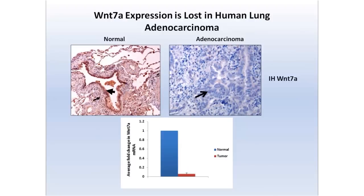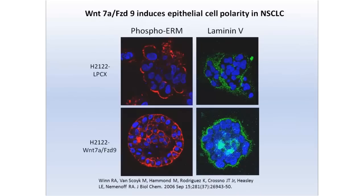If you look at normal lung — given here on the left, stained for Wnt7a, which shows up in brown — you can see that Wnt7a is all over the place. When this normal lung tissue becomes cancerous, as shown on the right with an adenocarcinoma example, there's no brown color — Wnt7a disappears. This is similar to what we see with P53 in other tumors, where it becomes mutated before normal tissue can become cancerous. They estimate 85% of all lung tumors lose Wnt7a.